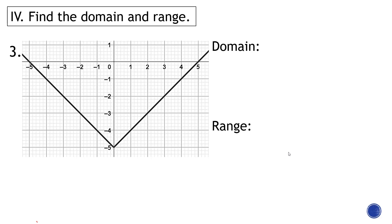This is an example of an absolute value function. There are no arrows on left or right, but we assume they are arrows. The domain goes from negative infinity to positive infinity. For the range, at the bottom of the graph we start at negative 5, going up to positive infinity with no restriction, so the range is [−5, +∞).